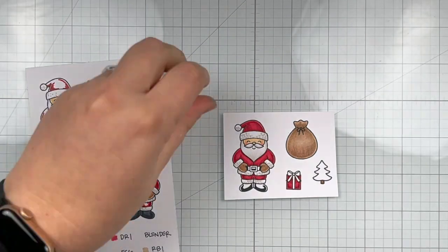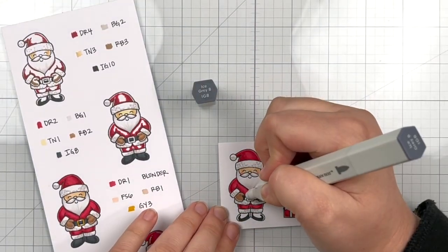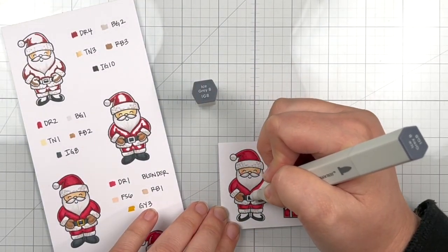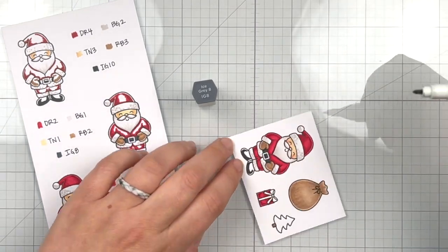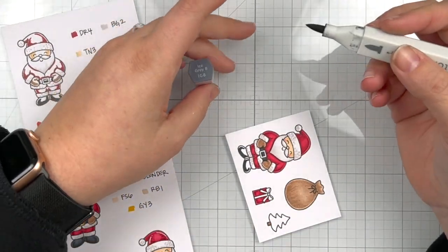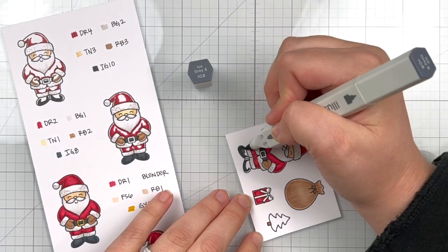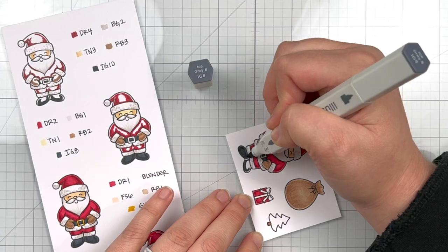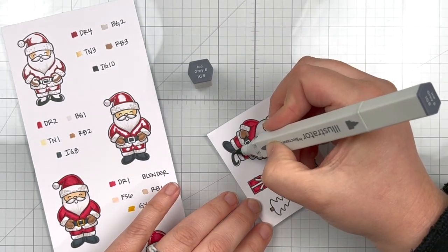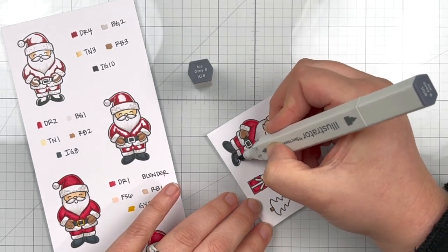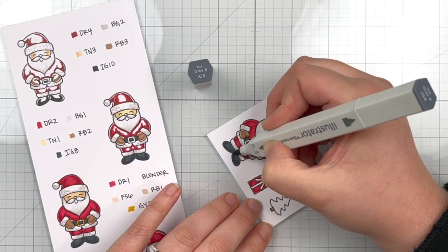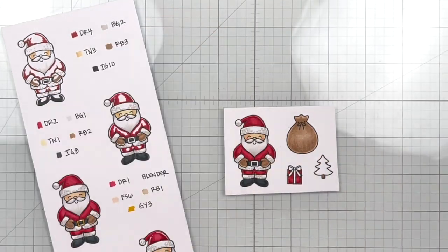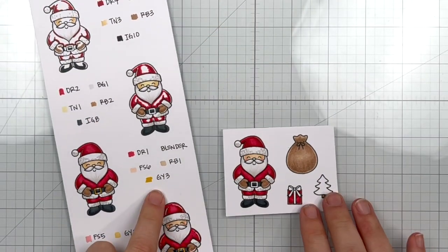So I am finishing up my Santa here. And as you can see, I'm pretty much doing the other images at the same time because they use so many of the same colors. When I have a coloring guide, I try not to do too many different colors. So that way you can kind of color multiple images in with the same colors. That way it doesn't feel like you have to have a lot of different types of colors to follow a particular video.